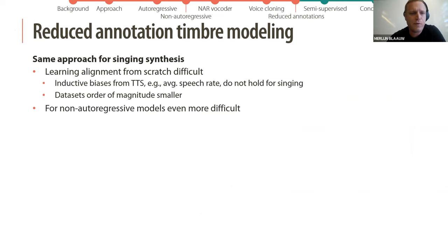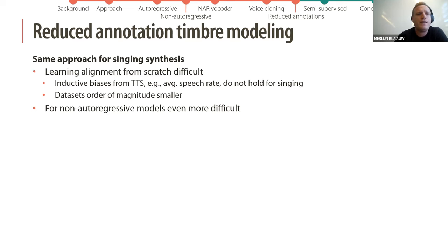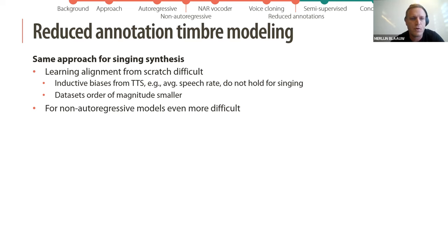However, if we apply this approach to singing synthesis, we found that learning the alignment is quite difficult. This might be because some inductive biases from text-to-speech do not hold — for instance, the average speaking rate will be quite different. Also, dataset sizes for singing synthesis can be an order of magnitude smaller than for text-to-speech, and for non-autoregressive models this becomes even more difficult.